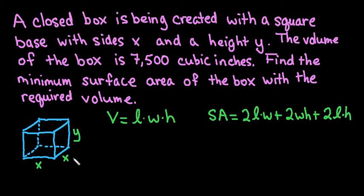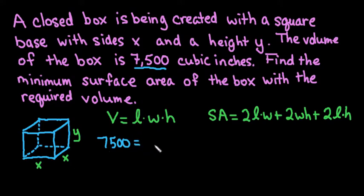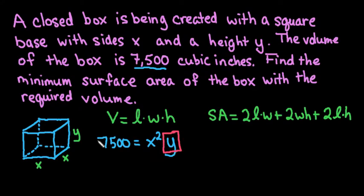We want to replace our L, W, and H with our variables x and y just to make it easier to solve. We know the volume is 7,500 cubic inches, so we would say 7,500 equals x squared times y. To have only one variable, the easier one to solve for is y so we don't have to deal with the square root. So y is equal to 7,500 divided by x squared.